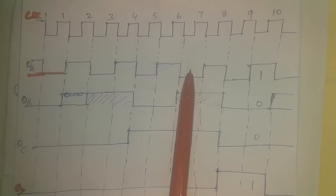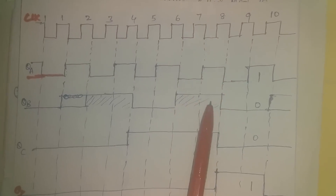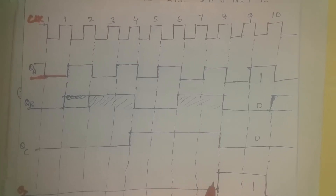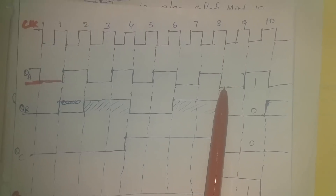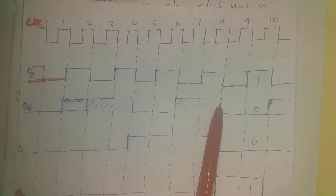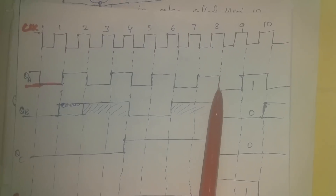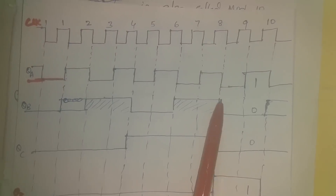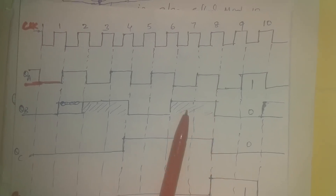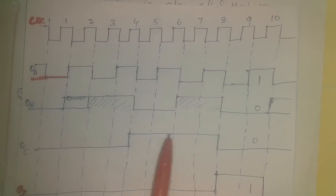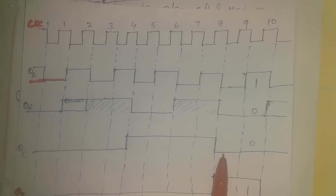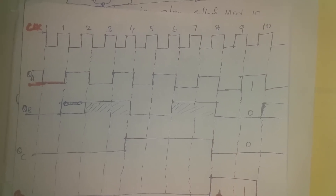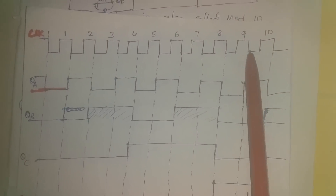At the negative edge of the eighth clock, QA undergoes a transition and becomes low; QB undergoes a transition and becomes low; QC also undergoes a transition because QB has a negative edge, so QC goes low. Since QD undergoes a transition at the negative edge of QC, QD goes high.